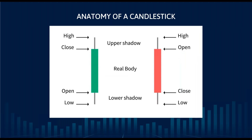The first thing is the anatomy of the candlestick. It's really a very simple picture. There are many ways candlesticks can be presented. Institutional reports tend to use black and white — black bars for down, white bars for up. More generally accepted is green for the bullish candlestick and red for the bearish candlestick. These are the different parts of the candlestick. Let's first look at the bullish candlestick.